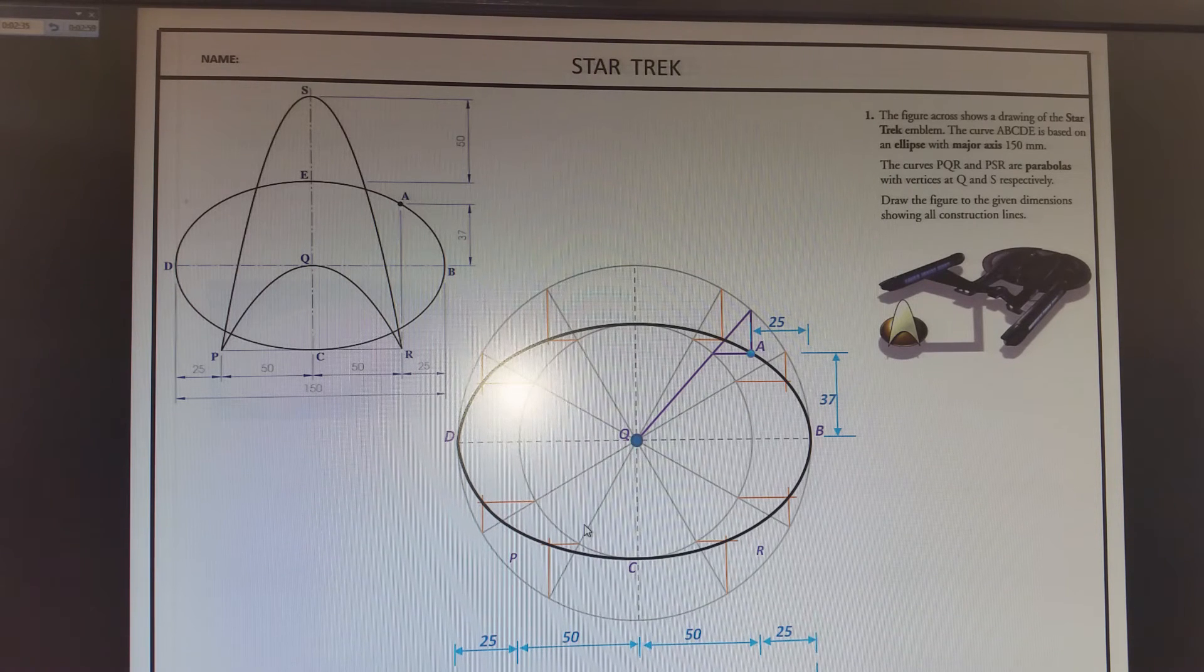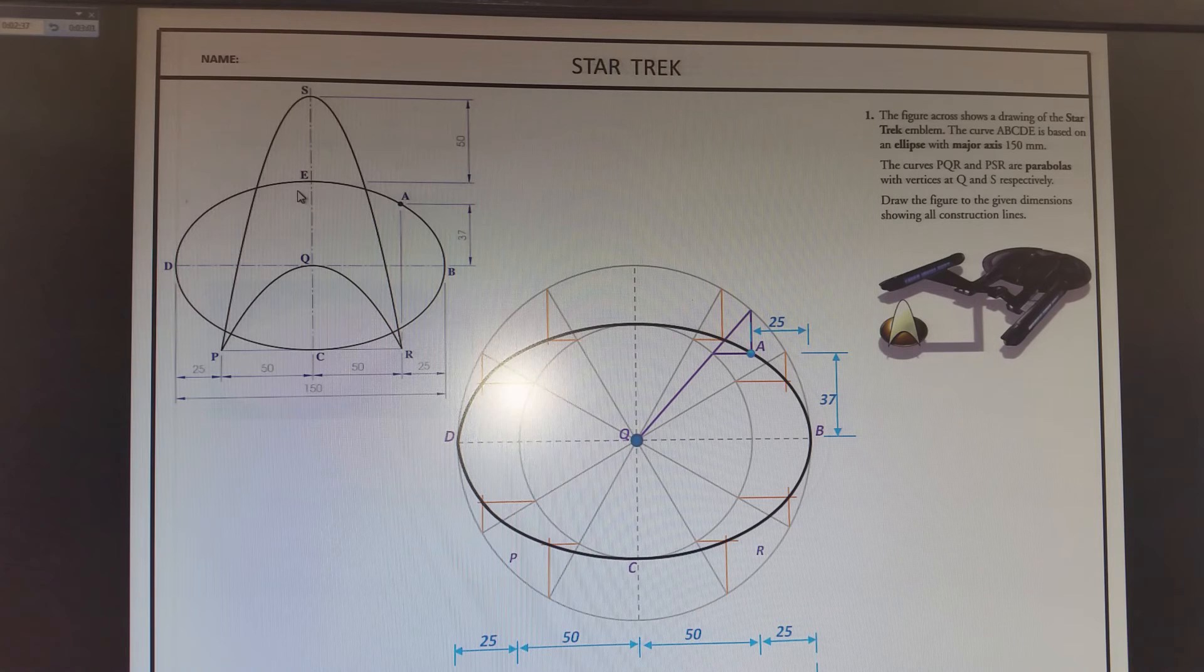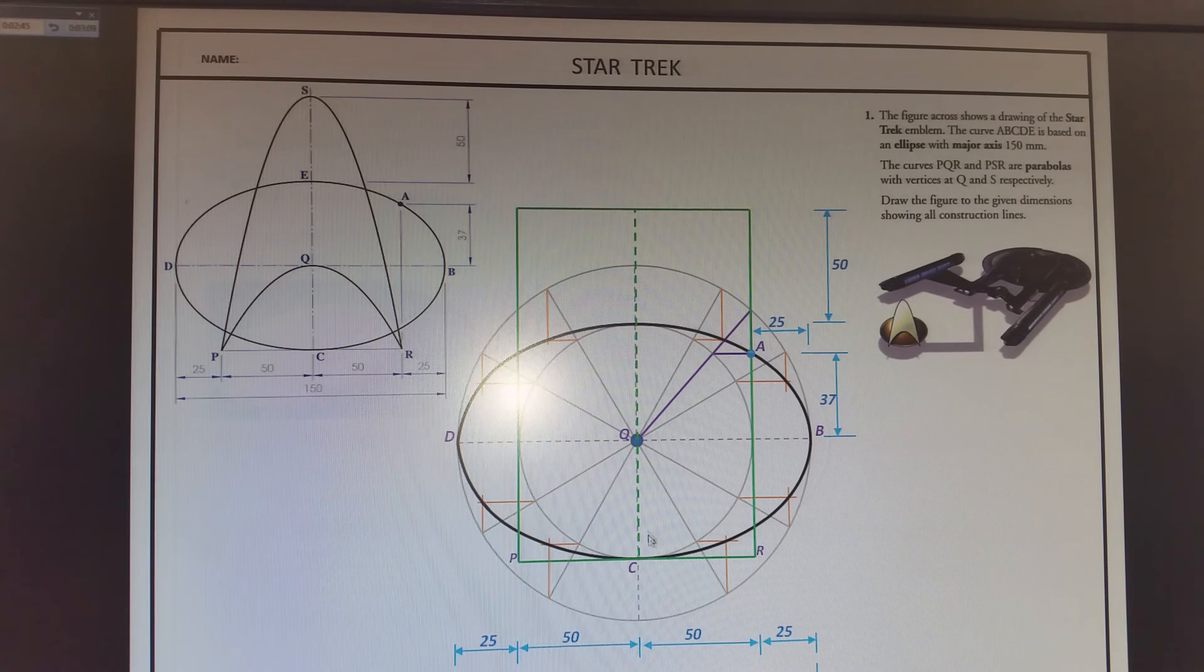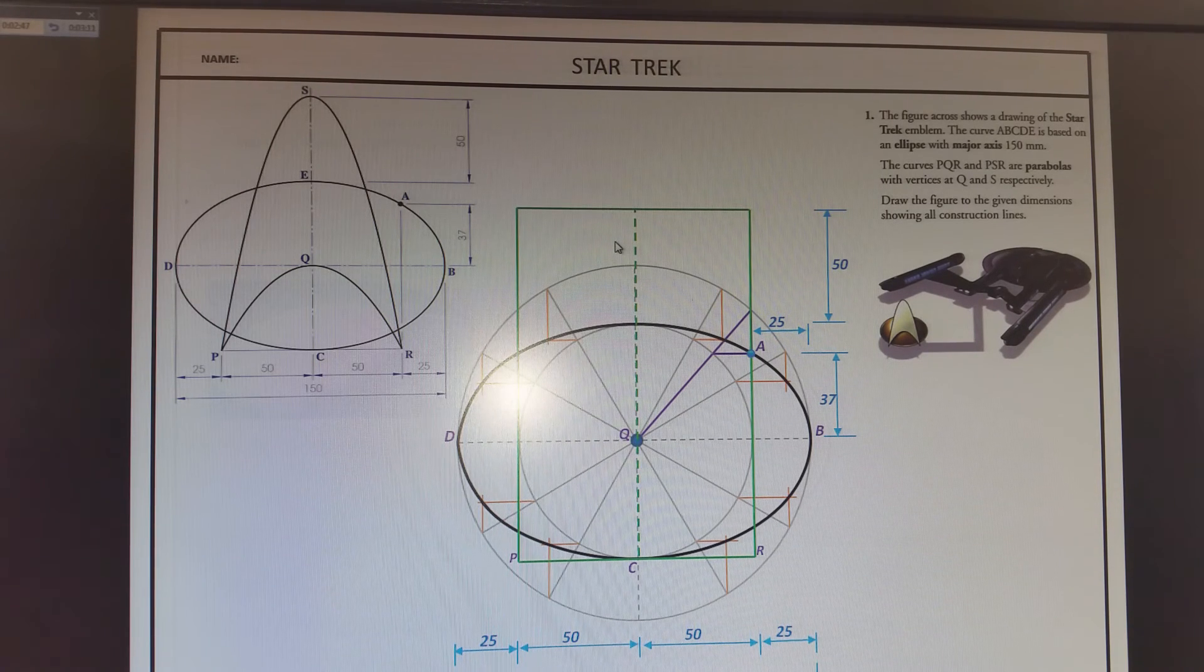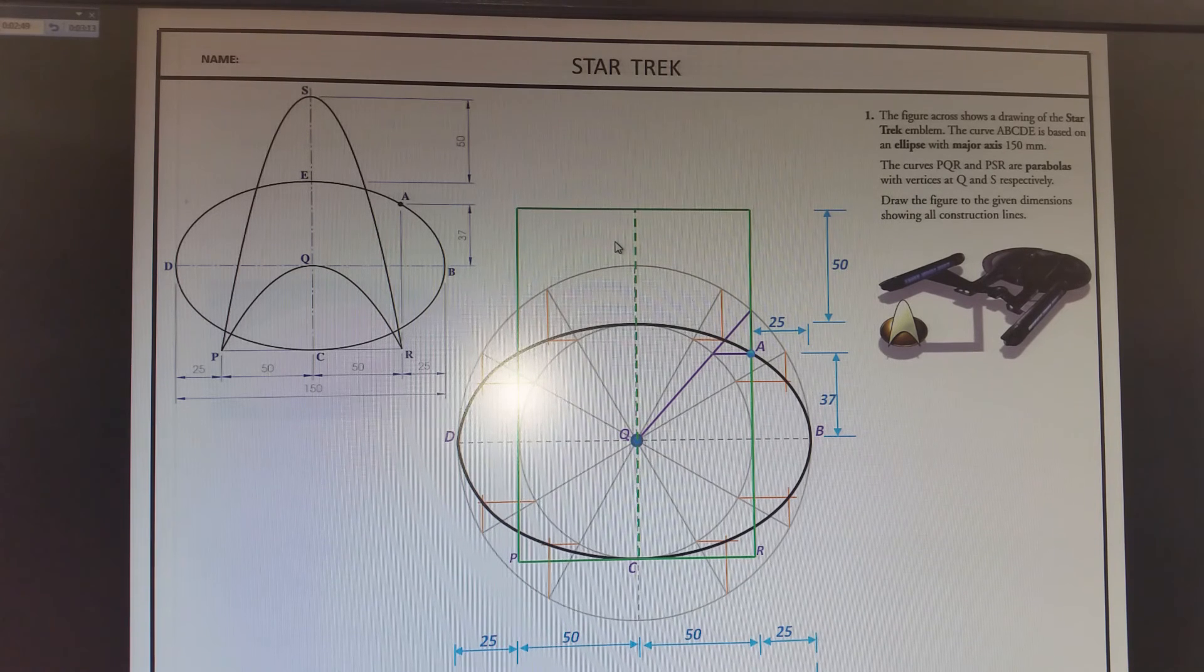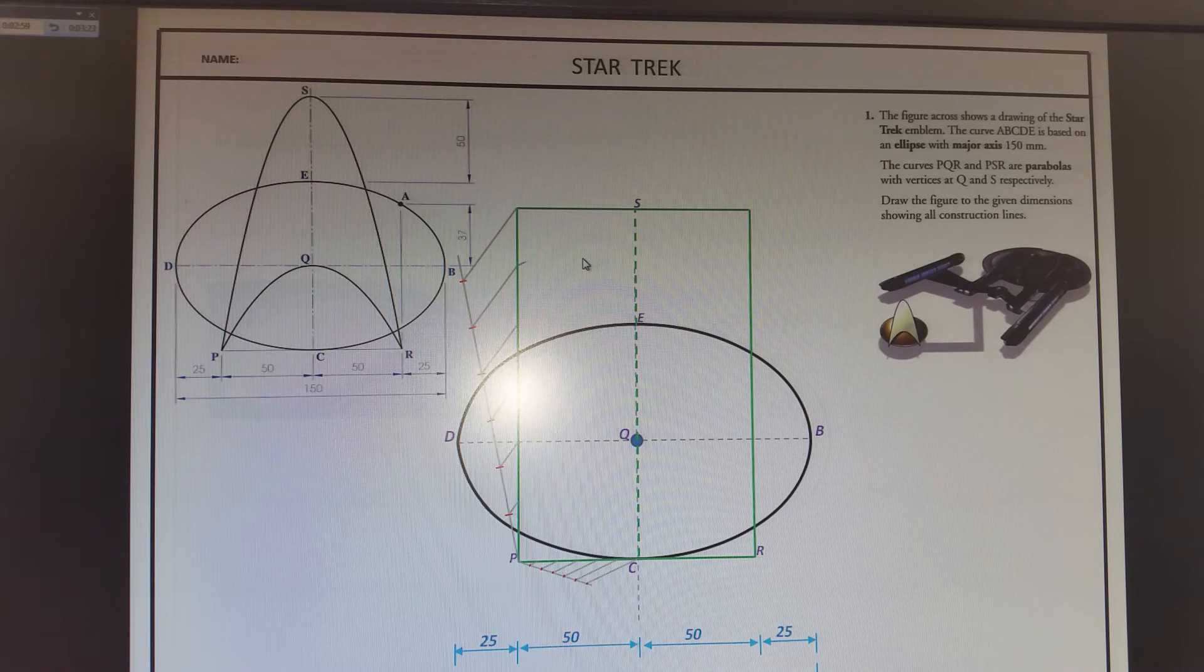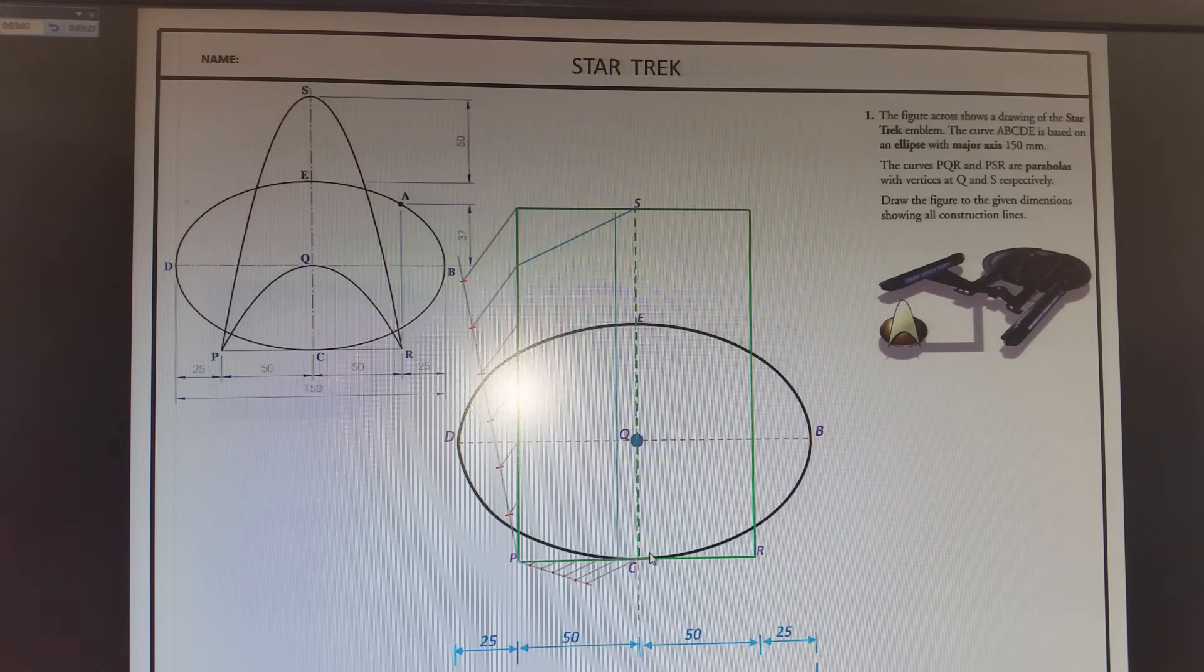Anyway, the next thing is to draw the outside parabola. As you can see there, we come up 50 mils, like that, and complete our rectangle because we know it's 50 and 50 here. It's 100 wide. So, I normally suggest dividing it into 4, but we're going to do 6 here.